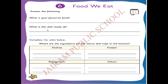Next - what is this dish made of? If you are writing curd rice, you can write what this dish is made of. For curd rice, you can write: this dish is made of rice, curd, salt, mustard seeds. Like this - what are the ingredients you are using for this curd rice, you can write everything here. Complete the table below - you have to complete the table with the ingredients you are using.